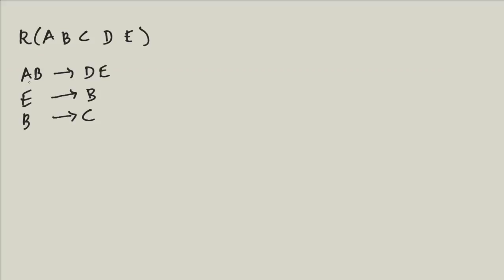From A and B — these two attributes — I can find D and I can also find E. From E, I can find B. And from B, I can go to C.